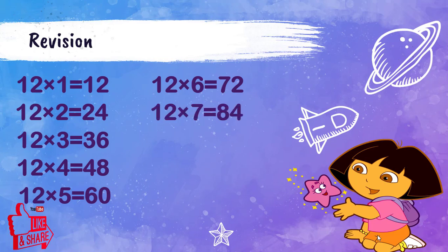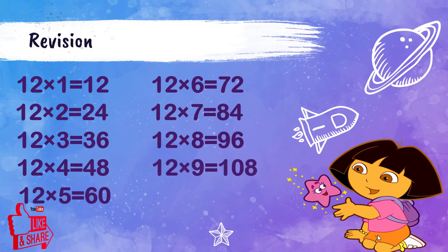12 7s are 84. 12 8s are 96. 12 9s are 108. 12 10s are 120.